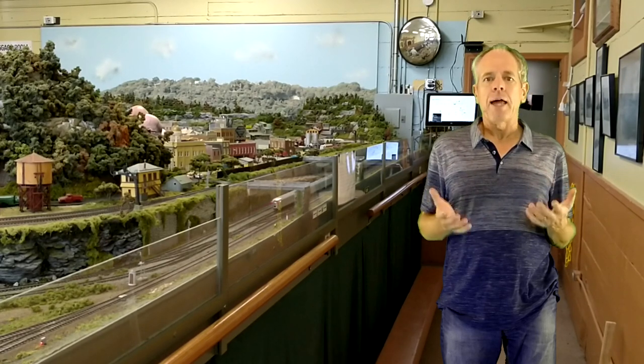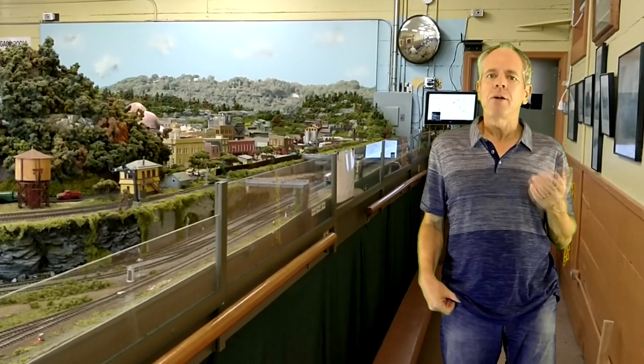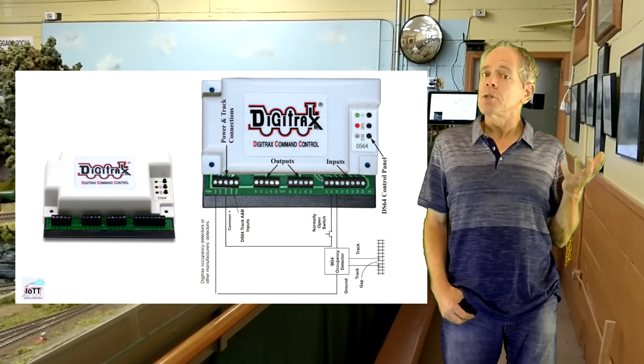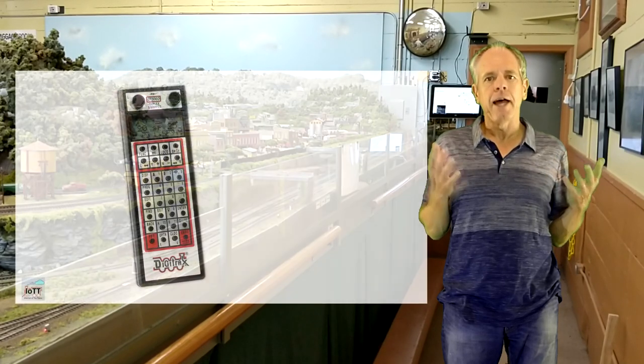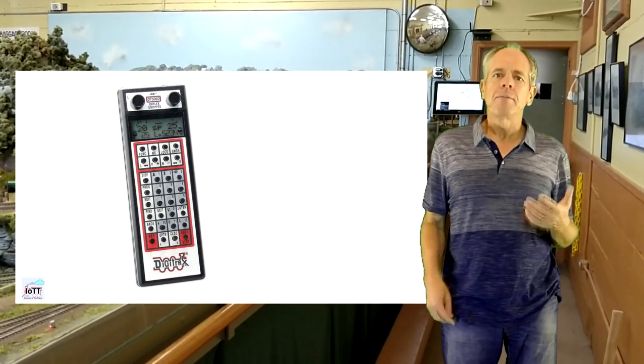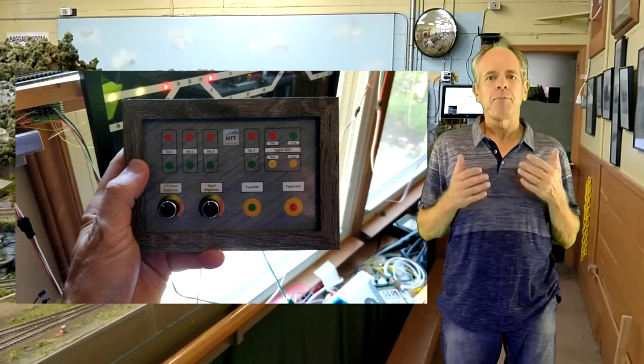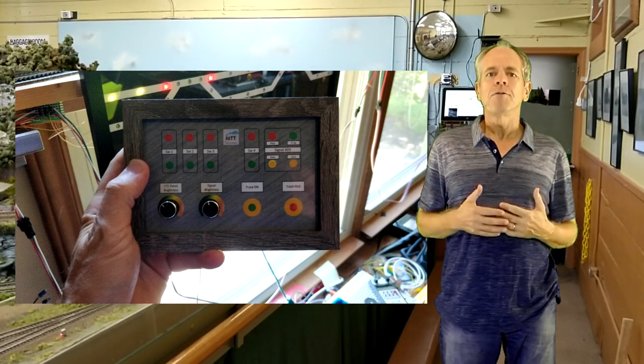If there is one area I always felt the Digitrax system is kind of weak, it is the topic of user input elements — things like local buttons to activate a switch, set a signal aspect, or a knob to control the brightness of a lamp. The only exception I am aware of are the local button inputs of the DS64, but those inputs are limited to control the switch outputs on that particular decoder. Other than that it is either handheld throttle or computer, and the throttle can only control switch addresses but no NMRA signal aspects, and communication of analog sensor values over LocoNet is completely unheard of. So I thought, let's change that and build a universal button panel that can do all of the above and more.